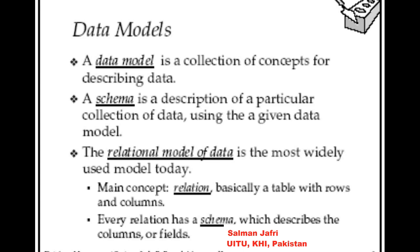A data model is a collection of concepts for describing data. The relational data model is one model used for describing data and it is the widely used model today. Once we use any model for describing data — for example the relational model — we can have a schema. A schema is a description of a particular collection of data using a given data model. For example, the student and teacher entities and the relation between them form the schema of our classroom.